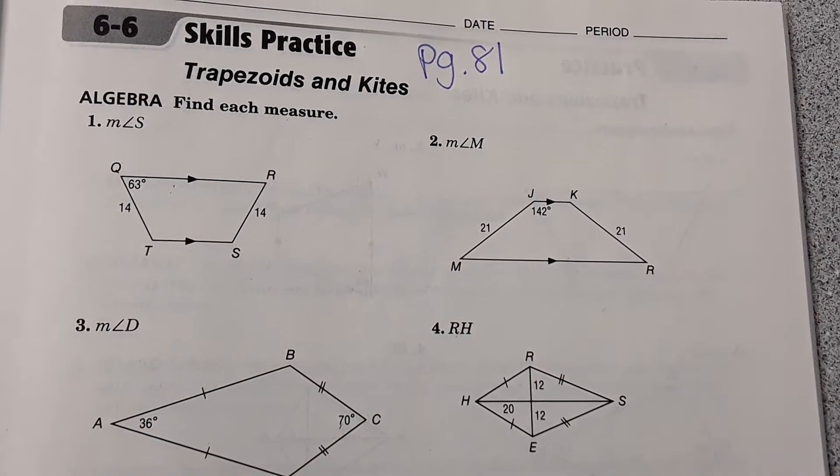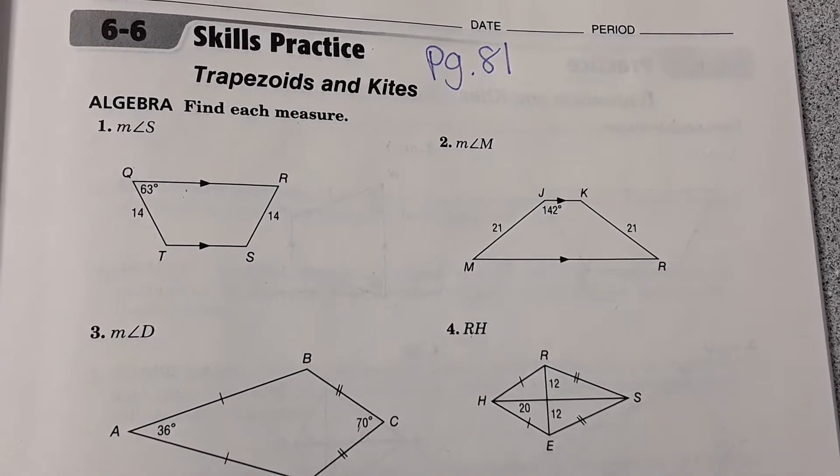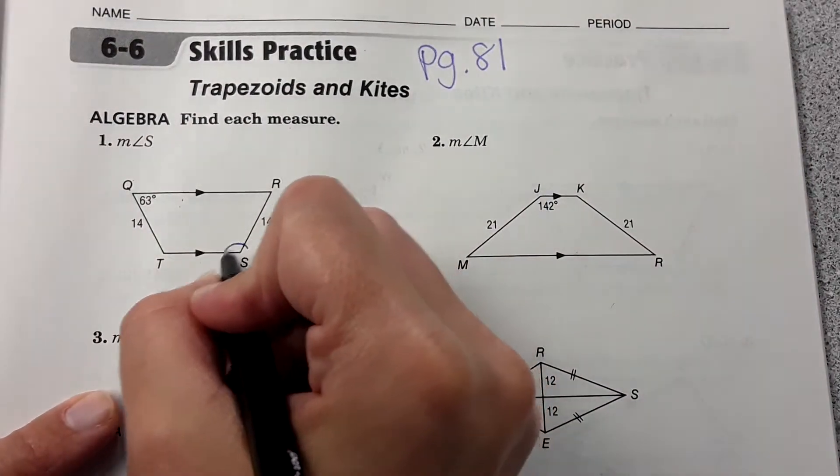So now we're looking at trapezoids and kites and finding angle measures. Number one asks for the measure of angle S right here.